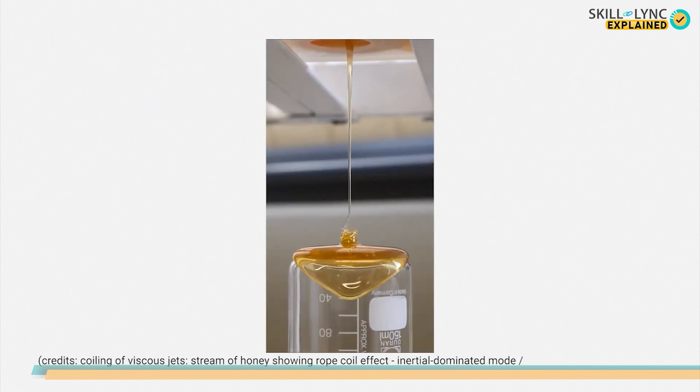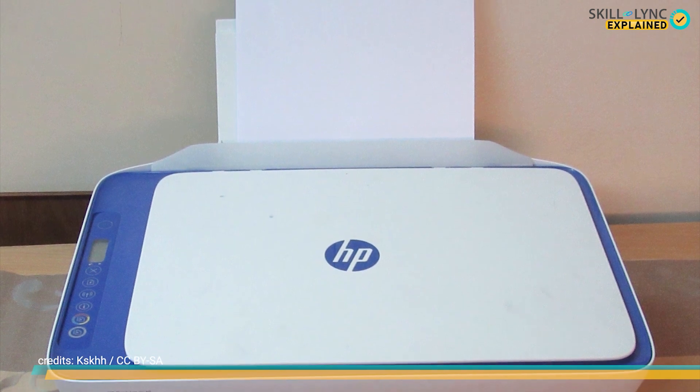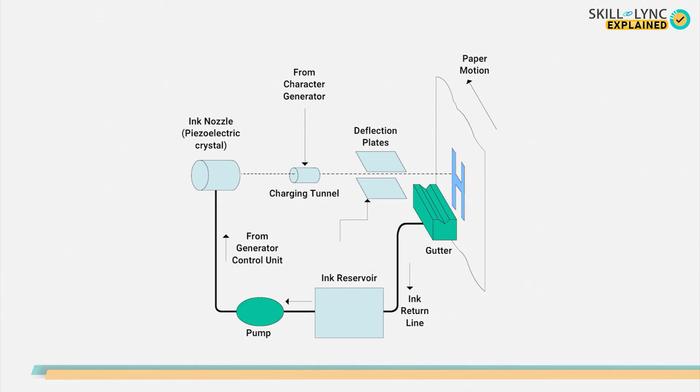Just like Jim, we too come across such seemingly normal yet extremely complex instances in our day-to-day life. The same Plateau-Rayleigh instability is observed in inkjet printers for printing where a stream of ink is divided into droplets and focused on a piece of paper for printing.